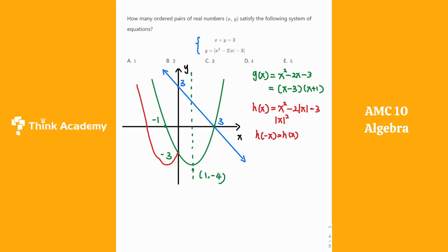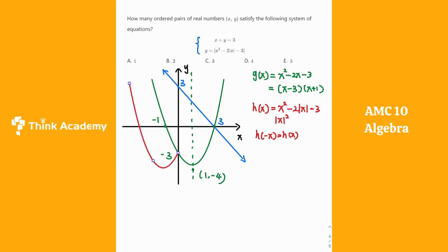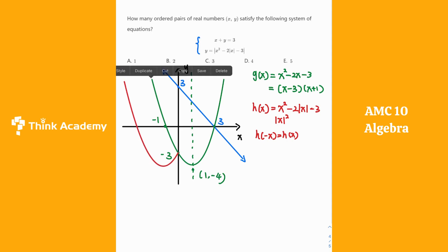On the left side, we should have a symmetric graph. Combining both sides gives the full graph of h of x. The point negative 1, negative 4 appears as the left vertex, and the y-intercept is negative 3, all determined from the symmetry.